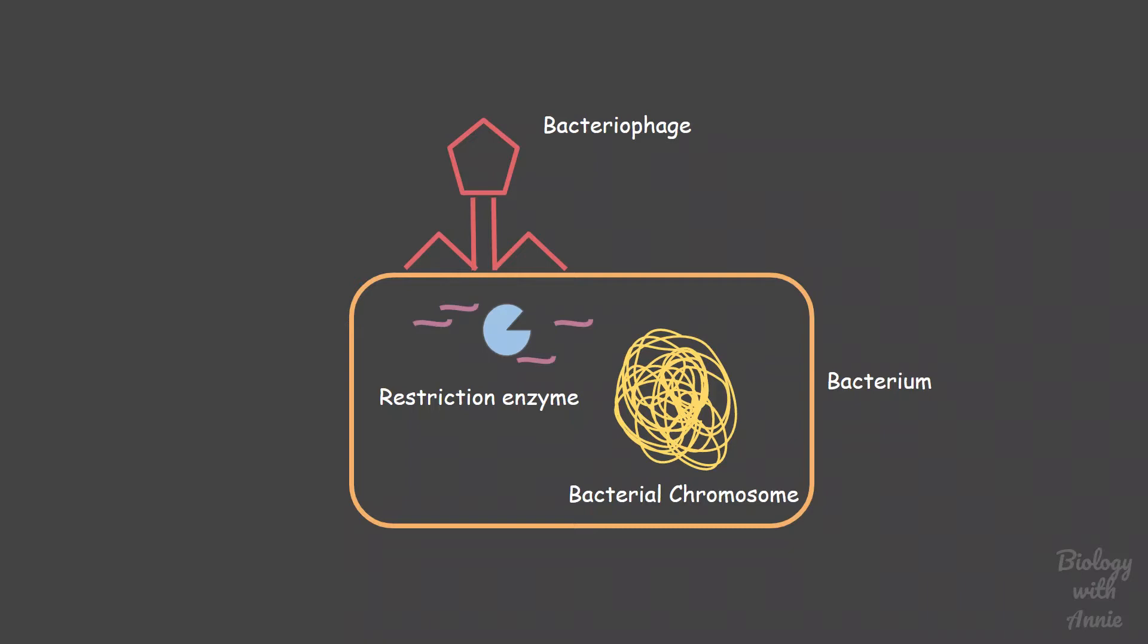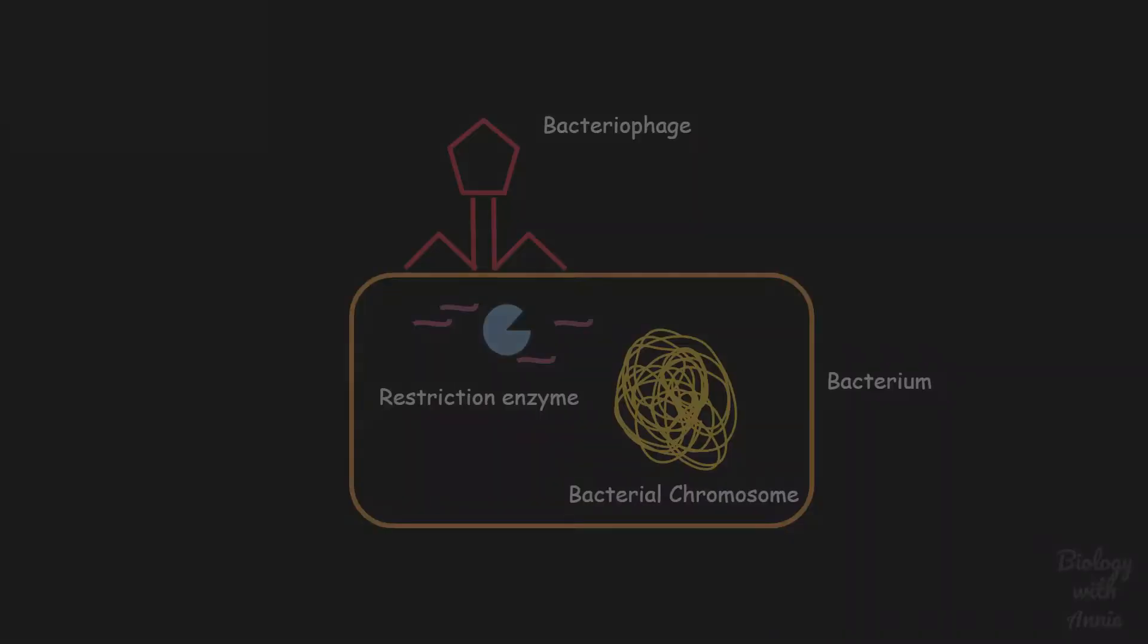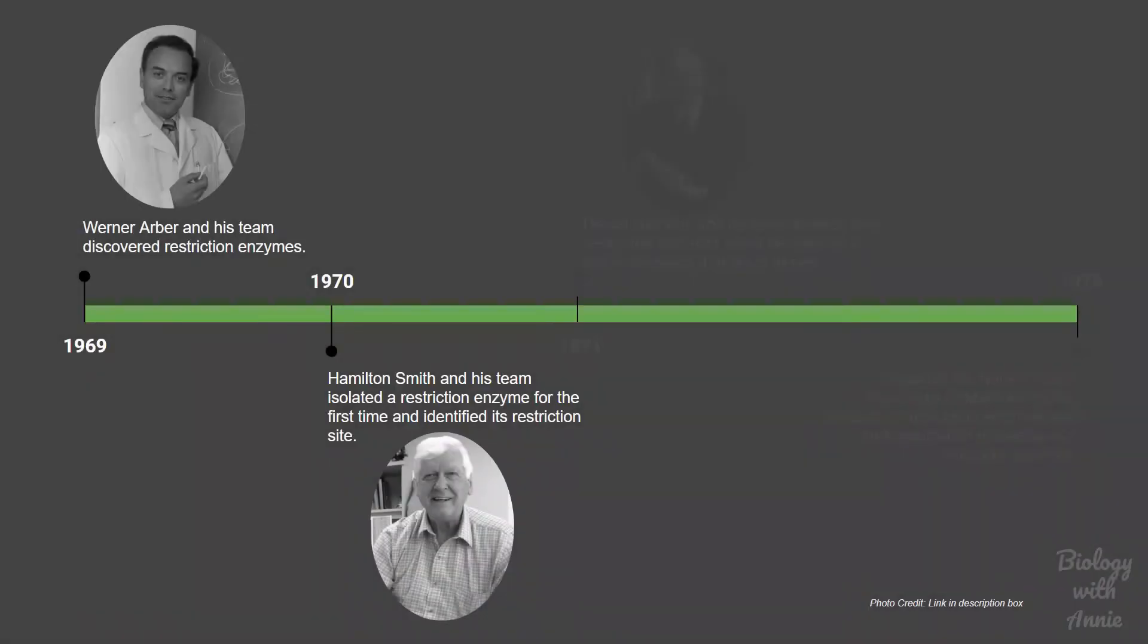Soon after its discovery, American microbiologist Hamilton Smith was able to devise a strategy to isolate the restriction enzyme from a bacteria known as Haemophilus influenzae. Using this, he was able to understand their molecular mechanism of action.